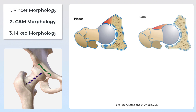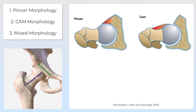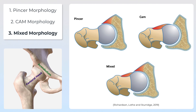Then we have a cam morphology. This is more common in males by three to one. This is where we have osteophytosis, or basically additional bony growth on the femoral head or the femoral neck, which happens due to repetitive overload on that area of the bone during the growth period in adolescence. Here we might be thinking about individuals involved in rotational and multi-directional sports, where they have those repetitive overloads in end range positions. And then we have the mixed morphology, which is where patients can have both a cam and a pincer presentation.